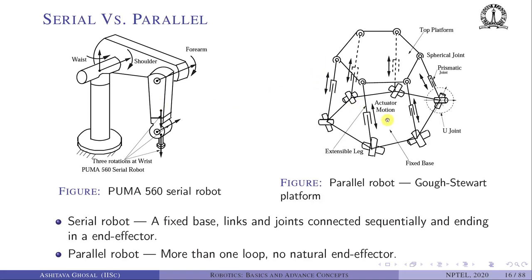The most famous parallel robot is the Stuart-Gough platform. It has a fixed base and a moving top platform connected by six legs. Each leg consists of a hook joint, a universal joint, a spherical joint, and a sliding joint. By extending or retracting the sliding joint — changing the length of the link — the top platform can be made to perform various kinds of motion. Both the PUMA and the Stuart platform will be studied later in the kinematics sections.